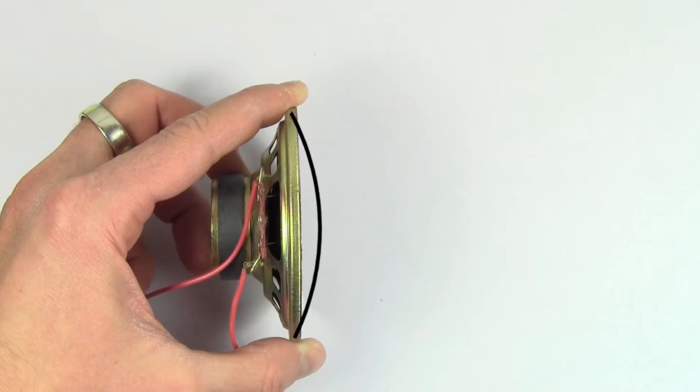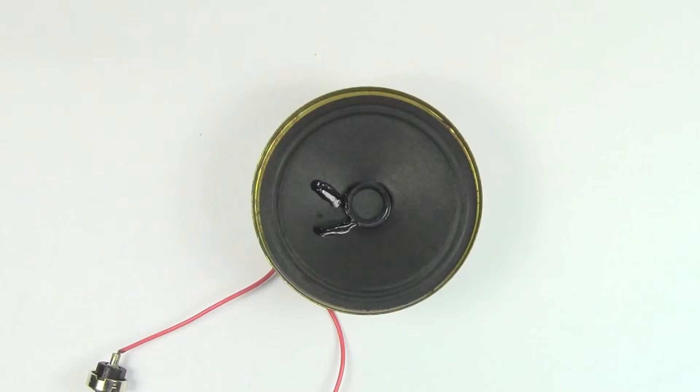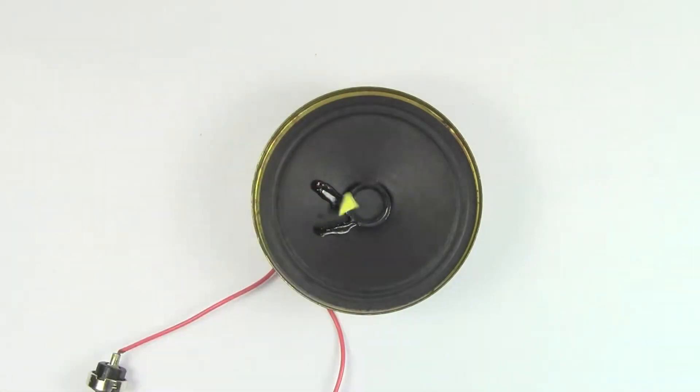Scientists often use the word oscillation to refer to the back and forth motion of an object. This speaker is oscillating too fast for the human eye to see, but if I put a piece of paper on the speaker, we see that because the diaphragm is oscillating, it's bumping into this piece of paper and causing it to dance.